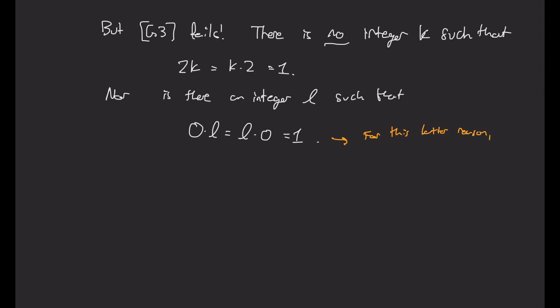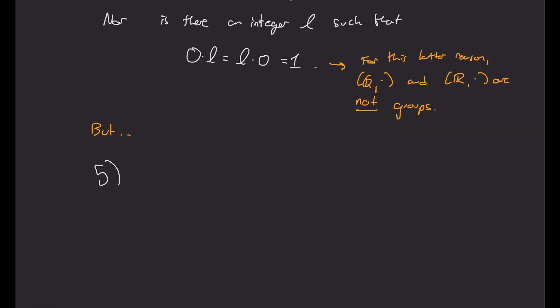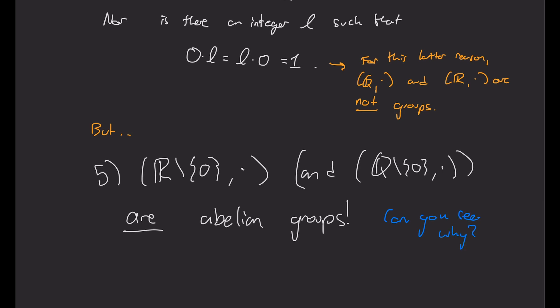And for this latter example, Q with multiplication and R with multiplication are also not groups. Because they have this 0 problem as well. But, if we remove the 0 problem, so if we take R and remove 0 and Q and remove 0, and we look at their sets with multiplication, then these are, in fact, abelian groups. And can you see why that's the case? So it's going to be the same properties that we've been doing.